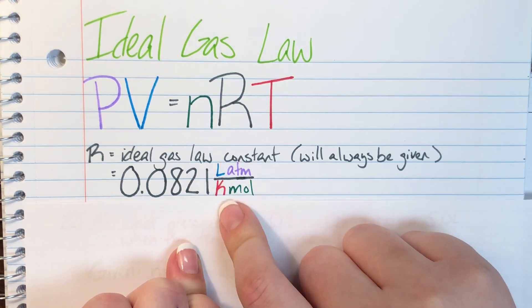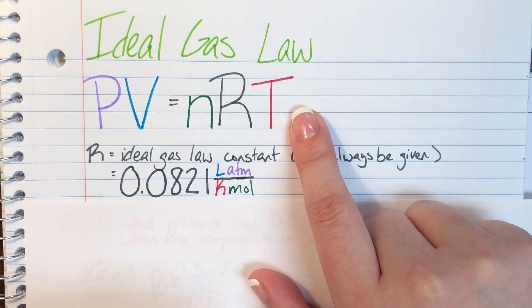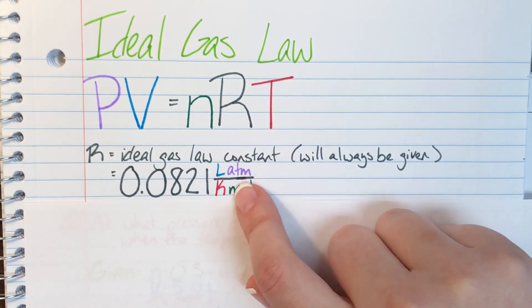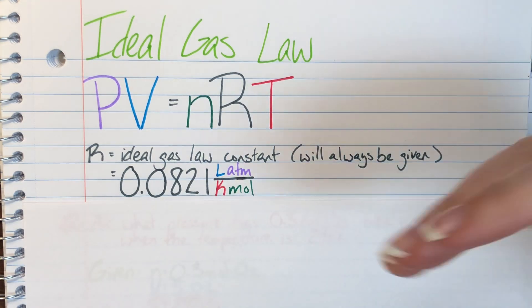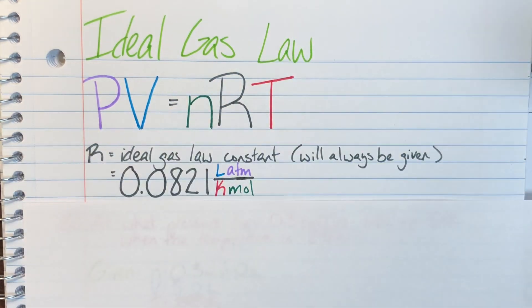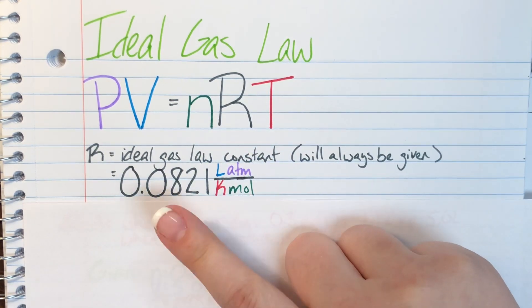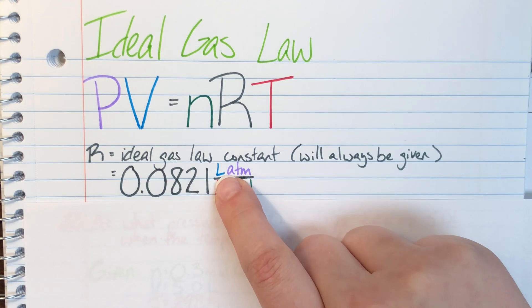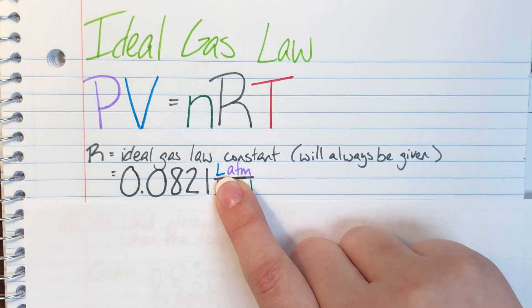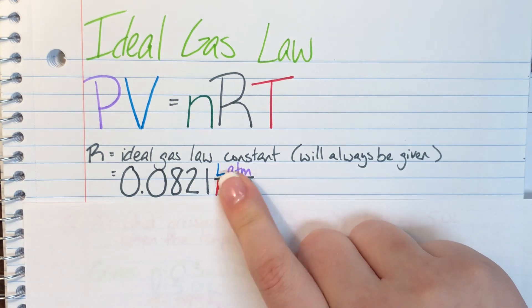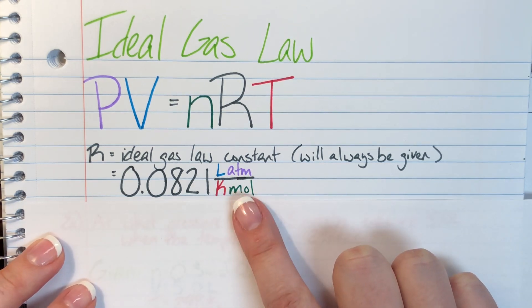As you can see, I have color-coordinated these with our actual equation so you can see which unit is associated with which of our variables. You will know now that our variables need to be in these particular units in order for us to use this R. If we do not have liters as our volume unit, we have to convert it to liters before we can continue the problem. Same with temperature not being in Kelvin, same with the pressure not being in atmospheres.